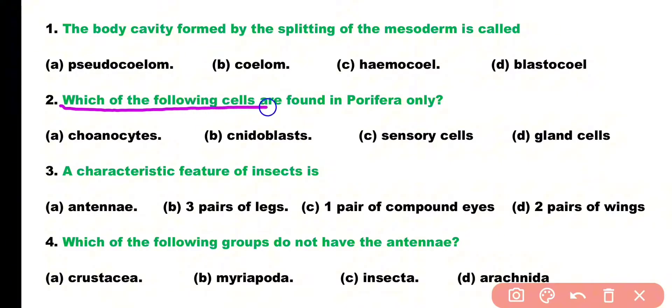Question 2. Which of the following cells are found in Porifera only? Choanocytes, cnidoblast, sensory cells, or gland cells? Correct answer is Option A. Choanocytes or collar cells are the specialized cells that are found in Phylum Porifera only.